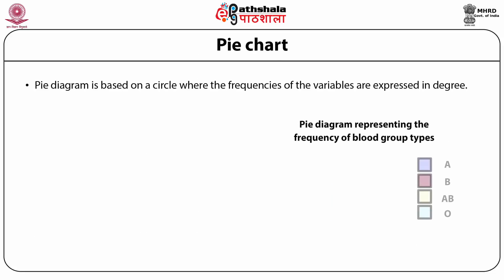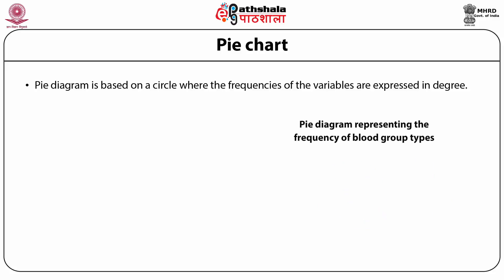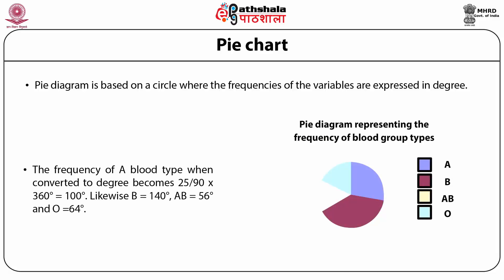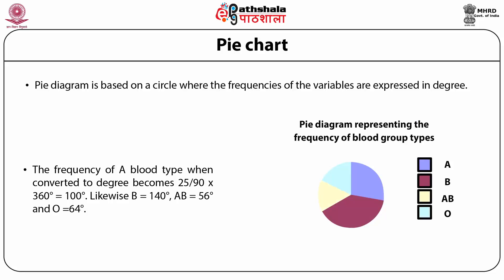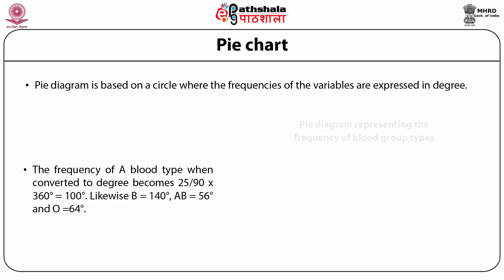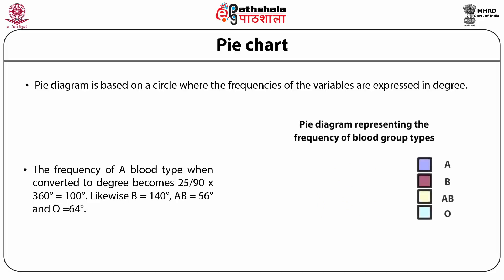A pie diagram is based on a circle where the frequencies of the variable are expressed in degrees. In Table 1, the sum of frequencies of all blood group types is 90. A circle represents 360 degrees. The frequency of blood group A, when converted to degrees, becomes 25/90 × 360 = 100 degrees. Likewise, blood group B is 140 degrees, AB is 56 degrees, and O is 64 degrees, as seen in the pie diagram representing the frequency of different blood group types.